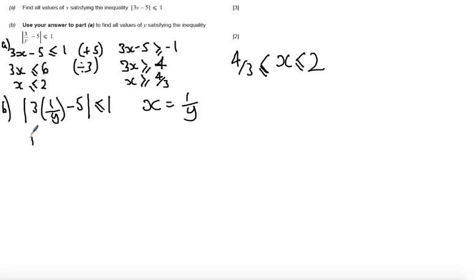So this leads us to say 4 thirds is less than or equal to 1 over y which is less than or equal to 2.